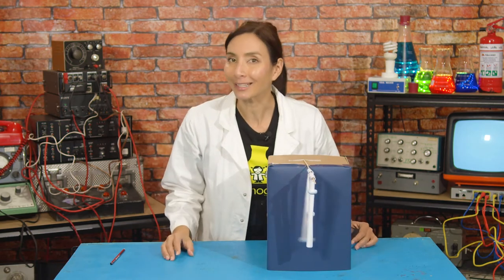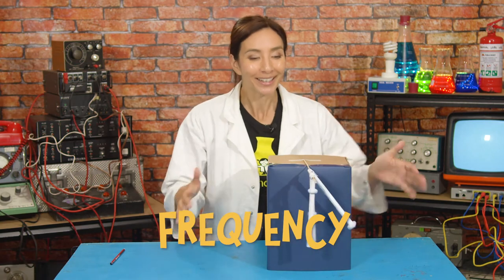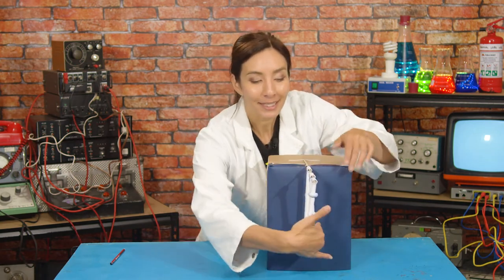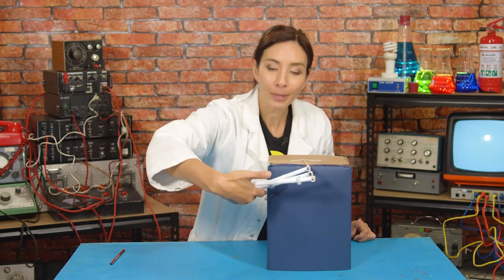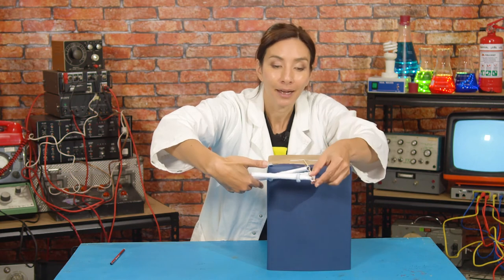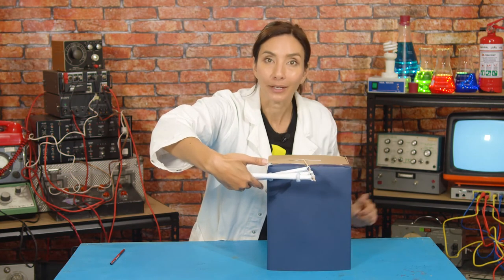This number of swings per second is what we call frequency. So let's pull them all back at the same time to see how they compare. So this is the same amount of energy I'm putting in and let's see how these swings work. Here we go.